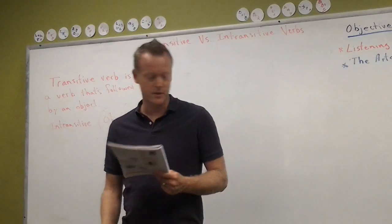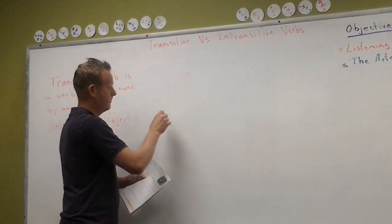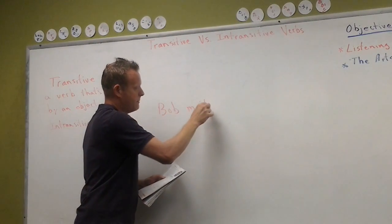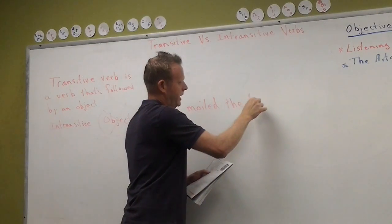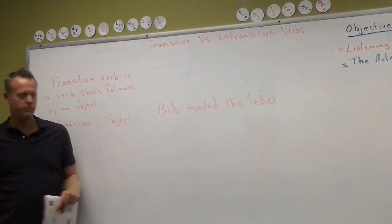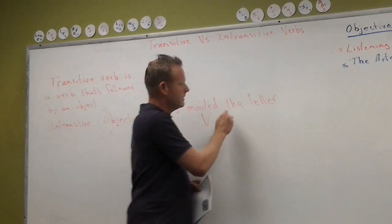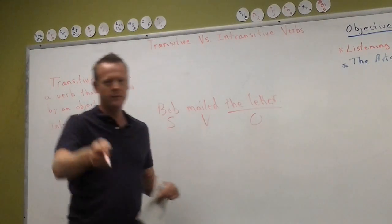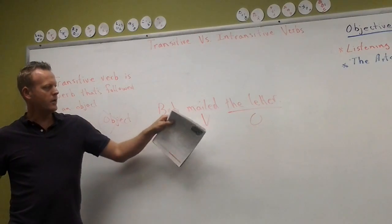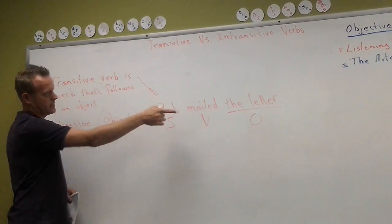Let's take a look at the textbook examples. Example A: 'Bob mailed the letter.' Where is the subject? Bob. Where's the verb? Mail. And where's the object? The letter. 'Mailed' means he put it in the mailbox so it would go to the address. So, 'Bob mailed the letter' — is that transitive or intransitive? Transitive. It's transitive because it has an object.